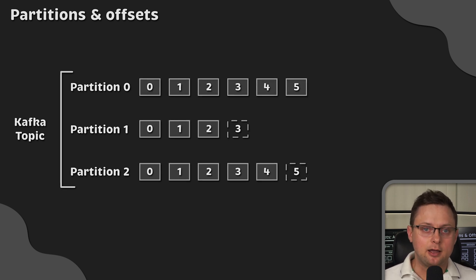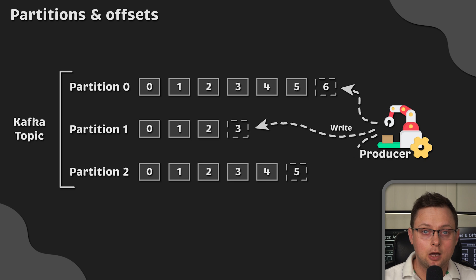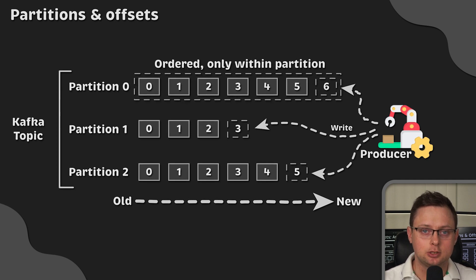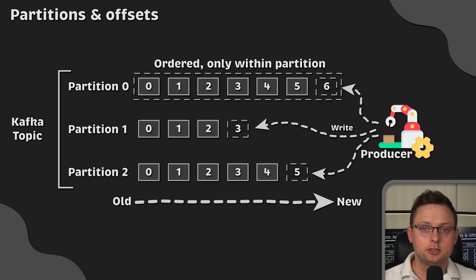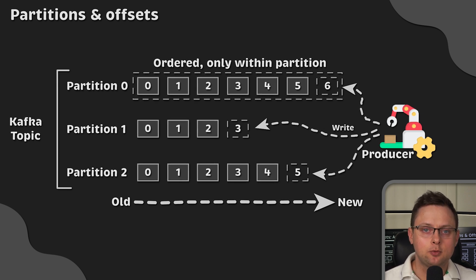In this example, I have a Kafka topic that consists of three partitions, labeled as partitions 0, 1, and 2. The messages sent to the Kafka topic are going to be written to these partitions, and the messages within each partition are going to be ordered: 0, 1, 2, etc. It's important to understand that only messages within a specific partition follow the same order, which is why maintaining order at the topic level is not an easy task, and not many messaging systems even try to support it.